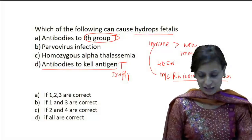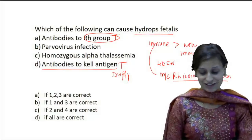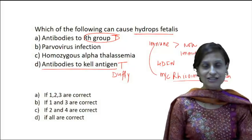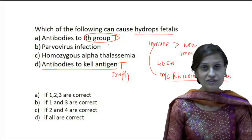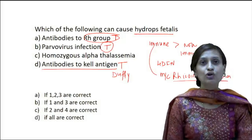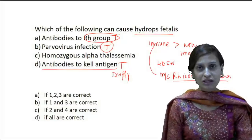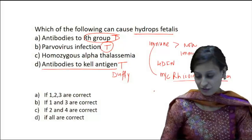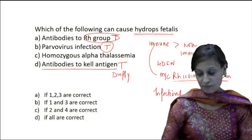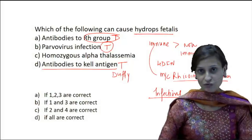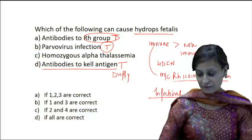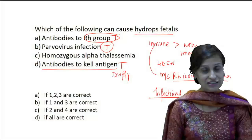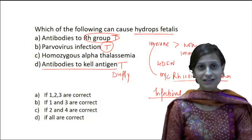Now looking at option B: parvovirus infection can cause hydrops fetalis — this is absolutely true. It is a cause of non-immune mediated hydrops fetalis, as infections can definitely cause non-immune hydrops. Among infectious causes, parvovirus B19 is the most common cause of non-immune mediated hydrops fetalis.